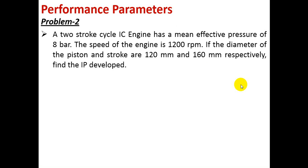Now let us check the second problem. A two-stroke cycle IC engine has a mean effective pressure of 8 bar. The speed of the engine is 1200 RPM. The diameter of the piston and stroke are 120 mm and 160 mm respectively. Find the IP developed. The difference from the first problem is this is a 2-stroke engine, and the number of cylinders is not given.